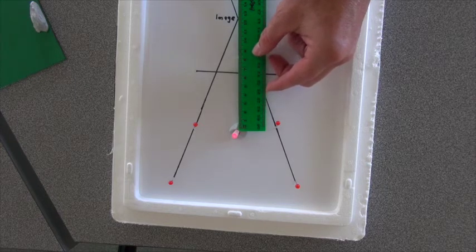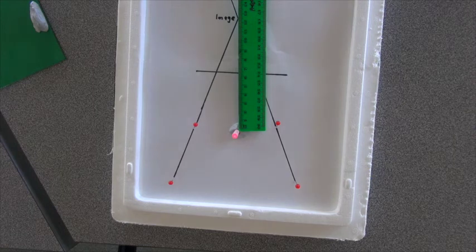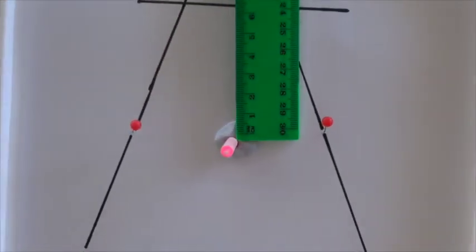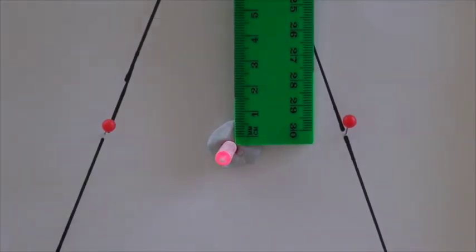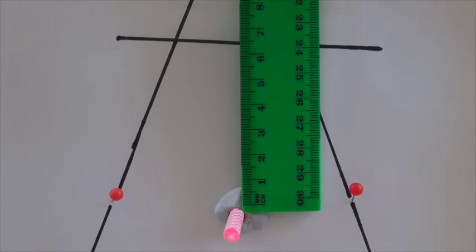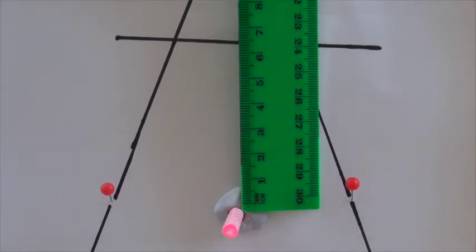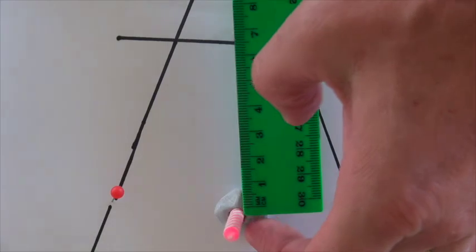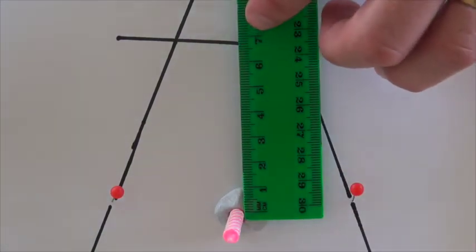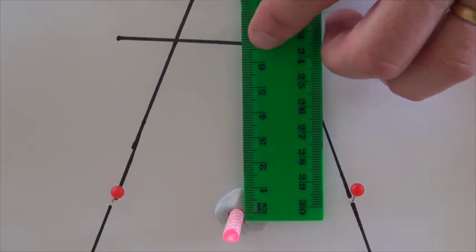Now I'm going to measure the distance from the candle to the mirror and then from the mirror to the idea of where the image is, and we're sitting around about six and a half centimeters from the candle to the mirror. Just take that off. Yeah, six and about six and a half centimeters.